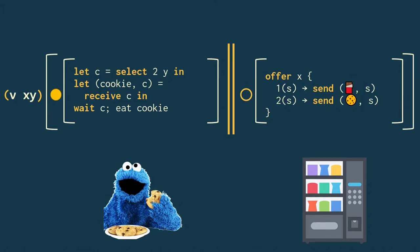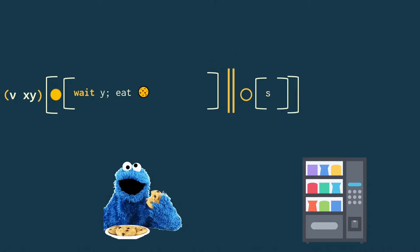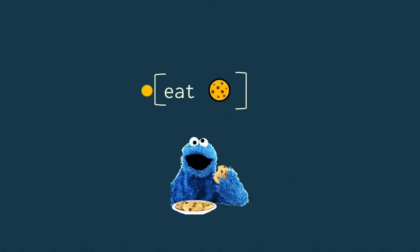Next, the customer selects button two, which in turn causes the vending machine to vend a cookie, which is then received by the customer. Now, the channel is closed by the wait keyword, which garbage collects the name restriction and the child thread, and the cookie monster can finally eat his cookie.